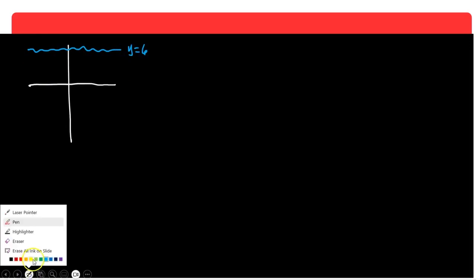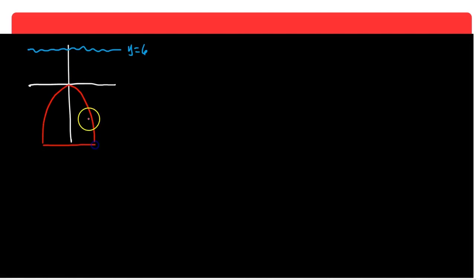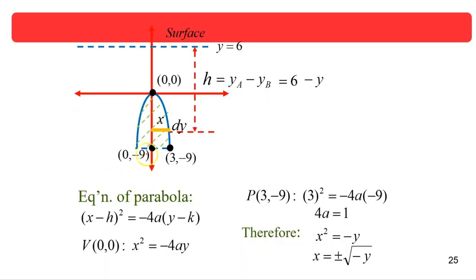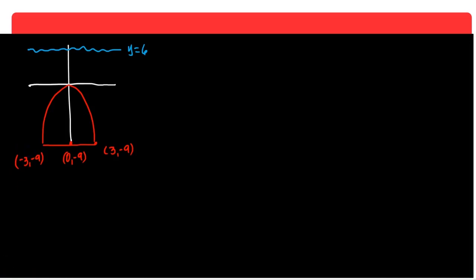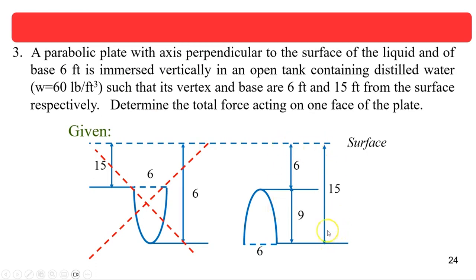The equation of a downward-opening parabola is (x − h)² = −4a(y − k). Drawing it: the liquid surface is at y = 6. The parabolic plate has a base width of 6 feet, so the base endpoints are at (3, negative 9) and (negative 3, negative 9), with the vertex at (0, 0) placed at the origin for simplicity. The plate spans 9 feet vertically.